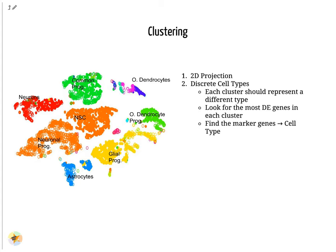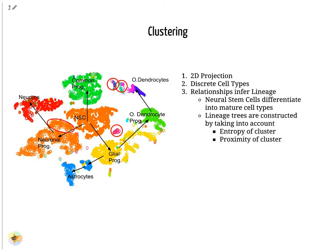Marker gene discovery can then be used to annotate the clusters. We can also further derive the relationships between these clusters by computing lineage trees based on the amount of noise in each cluster, with the expectation that stem cells have noisy expression profiles yielding broader clusters, and mature cells have very clear expression profiles yielding tighter clusters.